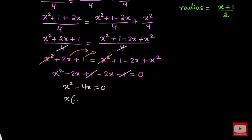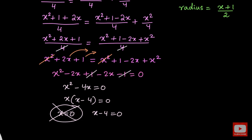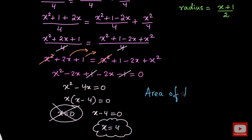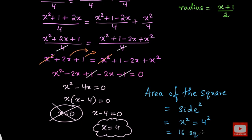We can take x as a common factor, giving x(x−4) equals 0. This gives two results: x equals 0 or x minus 4 equals 0. We cannot take x equals 0, because x is the side length of the square and it cannot be 0. So x minus 4 equals 0, which means x equals 4 — the side length of the square. The area of the square is side squared, which is x squared equals 4 squared equals 16 square units.